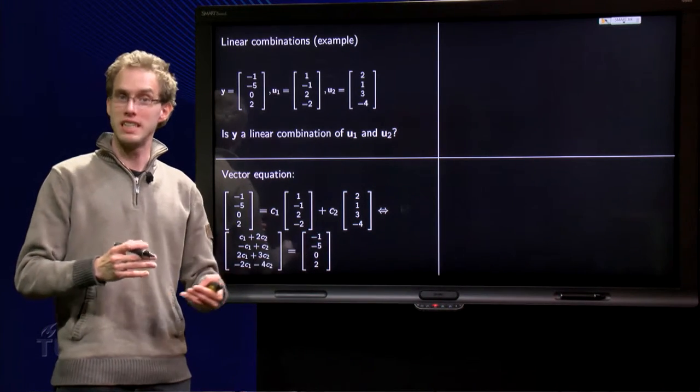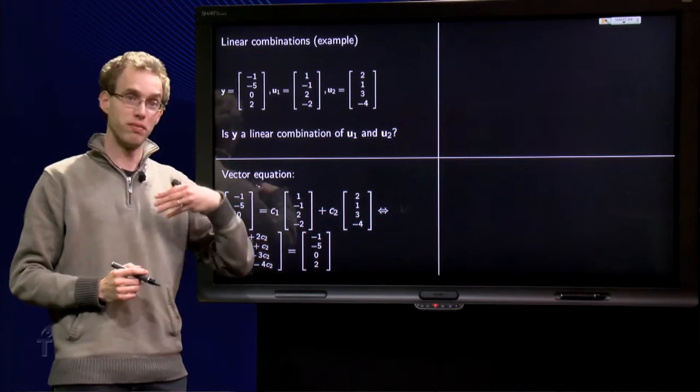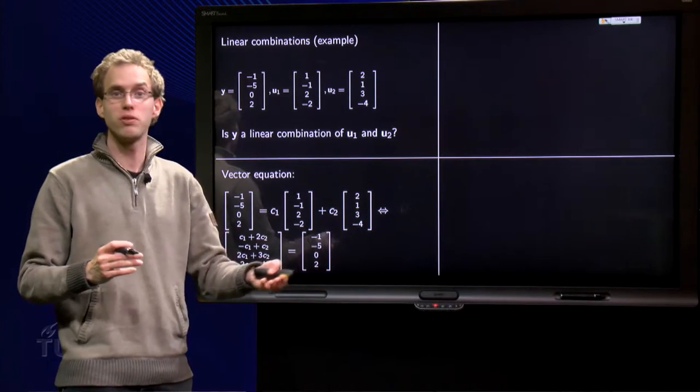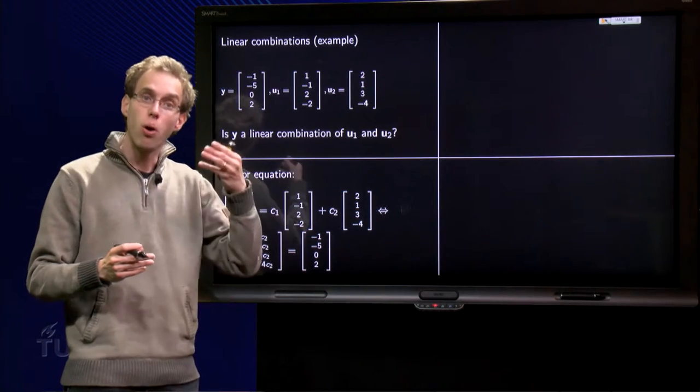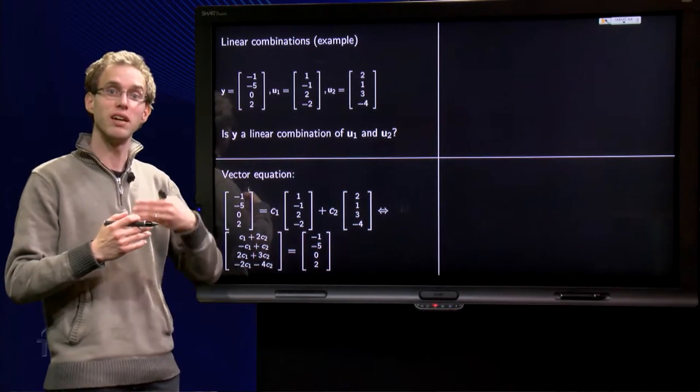Like, the vector 1, 2, 3 is equal to the vector 1, 2, 3, but the vector 1, 2, 3 is not equal, for example, to the vector 2, 4, 6, and the vector 1, 2, 3 is also not equal to the vector 1, 2, 4. All components of both vectors have to be the same.